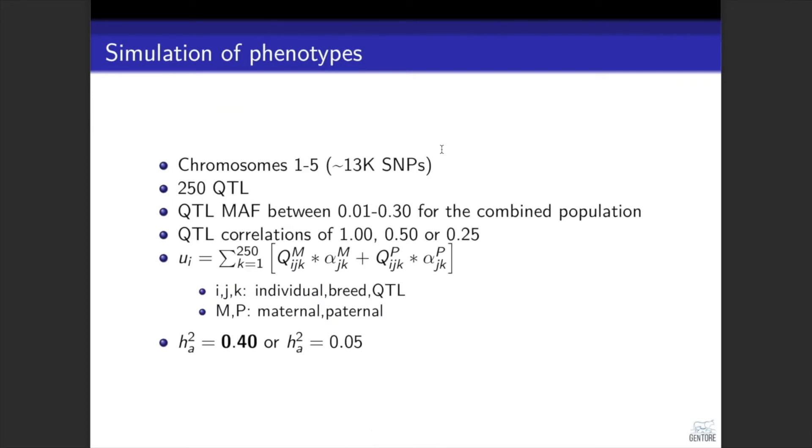We used only data from first five chromosomes for computational reasons, because we had a lot of scenarios and replicates. From the 13,000 SNPs we had, we selected 250 to be QTL with a restriction on minor allele frequency. We assumed that QTL have relatively low minor allele frequency compared to SNPs. And we simulated QTL effects directly from the multivariate normal distributions, considering three levels of correlations for the QTL effects. These are one, that means identical QTL effects, 0.5, and 0.25.